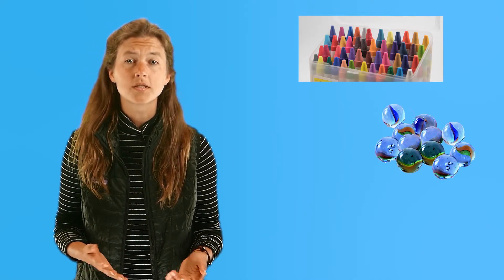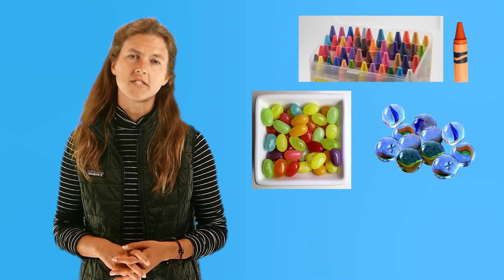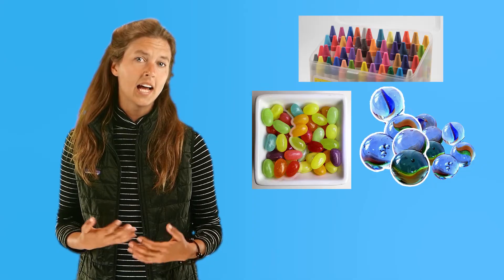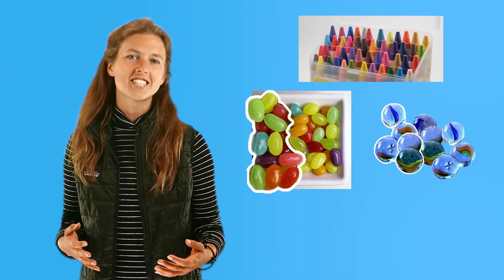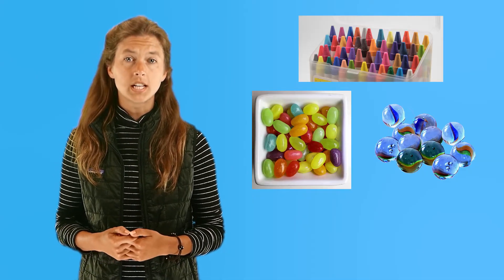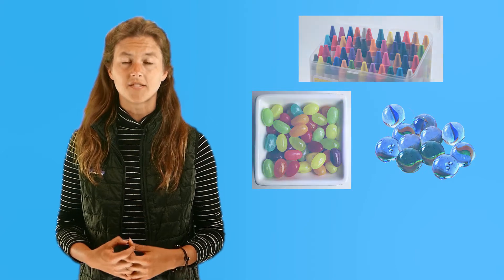A fraction can also be a part of a whole set of things. Sets are a collection of similar things. Examples of sets are this box of crayons, a set of marbles, or a bunch of jelly beans. One crayon is a fraction of the set. Five marbles are a fraction of the set. And twelve jelly beans are just a fraction of the whole bag, or the whole set of jelly beans. All of these show individual pieces of a set, which is the same thing as a fraction of a set.